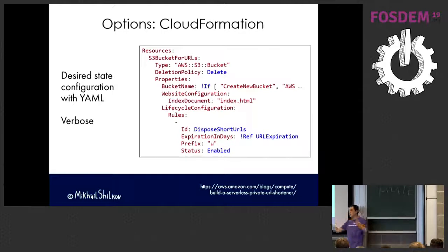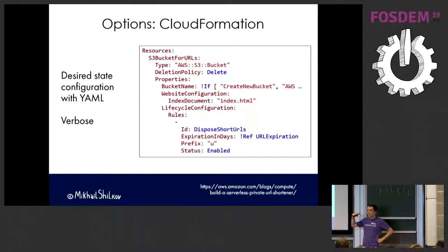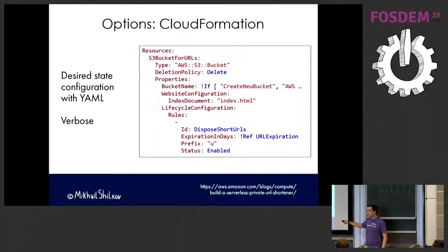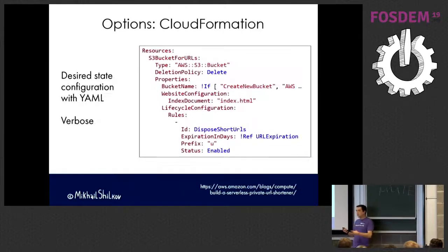There's a concept called desired state configuration where you describe the desired state of your system, and then the tool figures out how to migrate from the current state to your desired state. The default tool for AWS is CloudFormation - you write YAML files with all the resource definitions. A URL shortener example I found online takes about 300 lines of YAML. It's quite verbose and you don't get IntelliSense or compile-time checks because it's just a text file. It's also very specific to AWS.